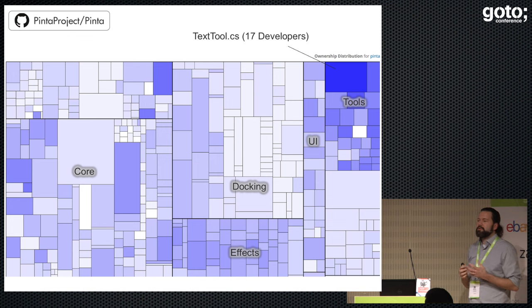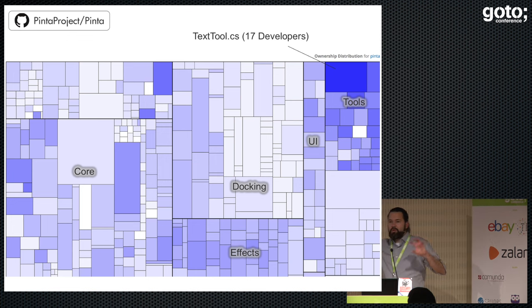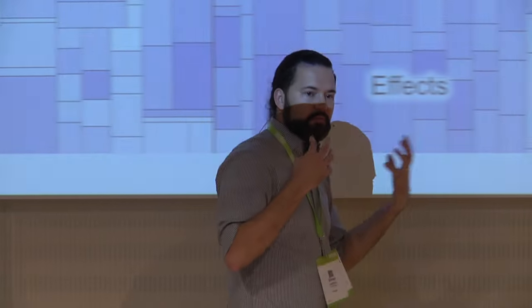This tree map from the open source .NET drawing program Paint.NET depicts how many different authors ever worked on the different files — the deeper the blue, the more developers. If something is white, either nobody on the existing team or only one person ever edited that file, meaning there's potentially a knowledge problem if those people leave or become bottlenecks. Knowing this early, you can use pair programming, peer review, or team rotation to build broader knowledge and avoid potential problems.